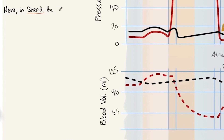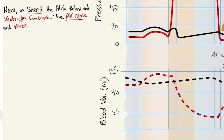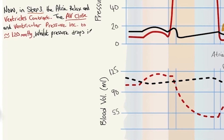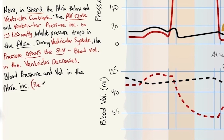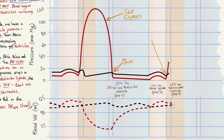In step three, the atria relax and ventricles contract. The atrioventricular valves close and ventricular pressure increases to approximately 120 mmHg, whilst pressure drops in the atria. During ventricular systole, the increased pressure opens the semilunar valve, and blood volume in the ventricles decreases. Blood pressure and volume in the atria increase because the atrioventricular valves are closed. On the graph, as ventricular pressure increases, the semilunar valve opens, and the blood volume graph shows ventricular volume decreasing.